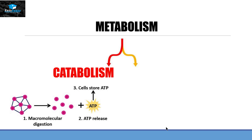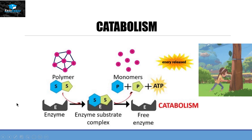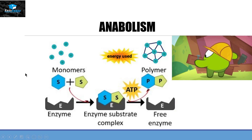Metabolism has two different types: catabolism and anabolism. Catabolism is a spontaneous reaction in which a polymer converts itself into monomers, releasing energy. Looking at the catabolism graph, the energy present in the reactants is higher than the energy in the products — with Gibbs free energy on the y-axis and time on the x-axis. The excess energy gets released after the reaction completes, making it a spontaneous or exergonic reaction.